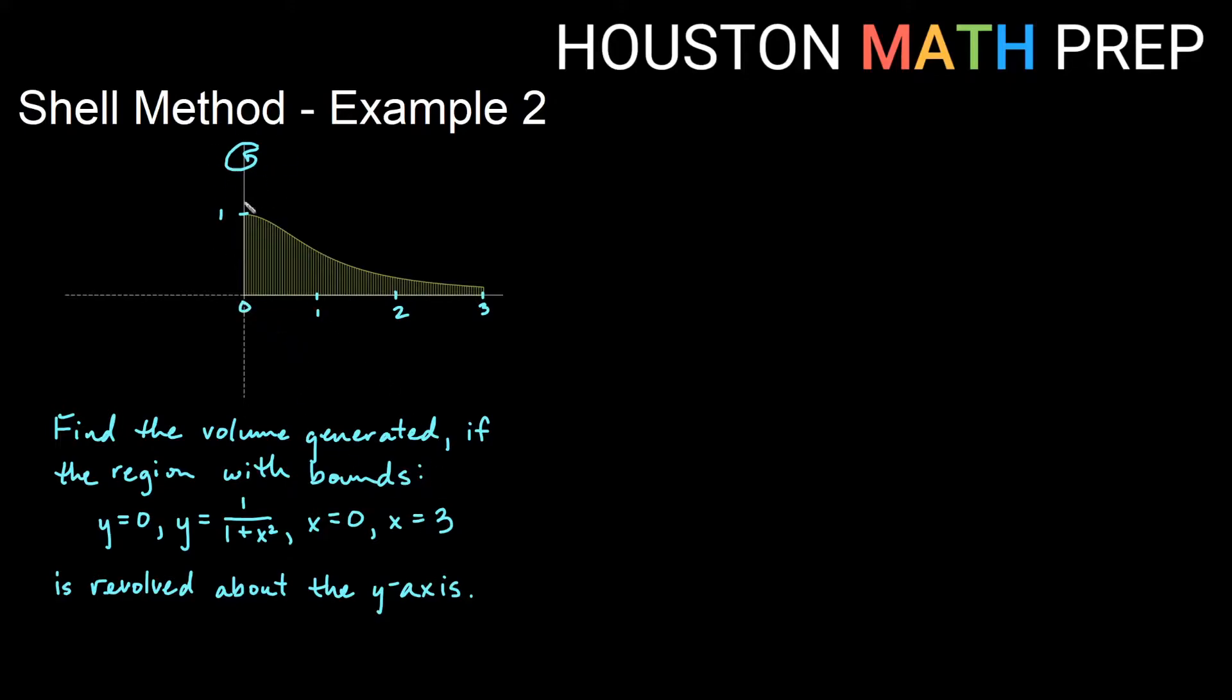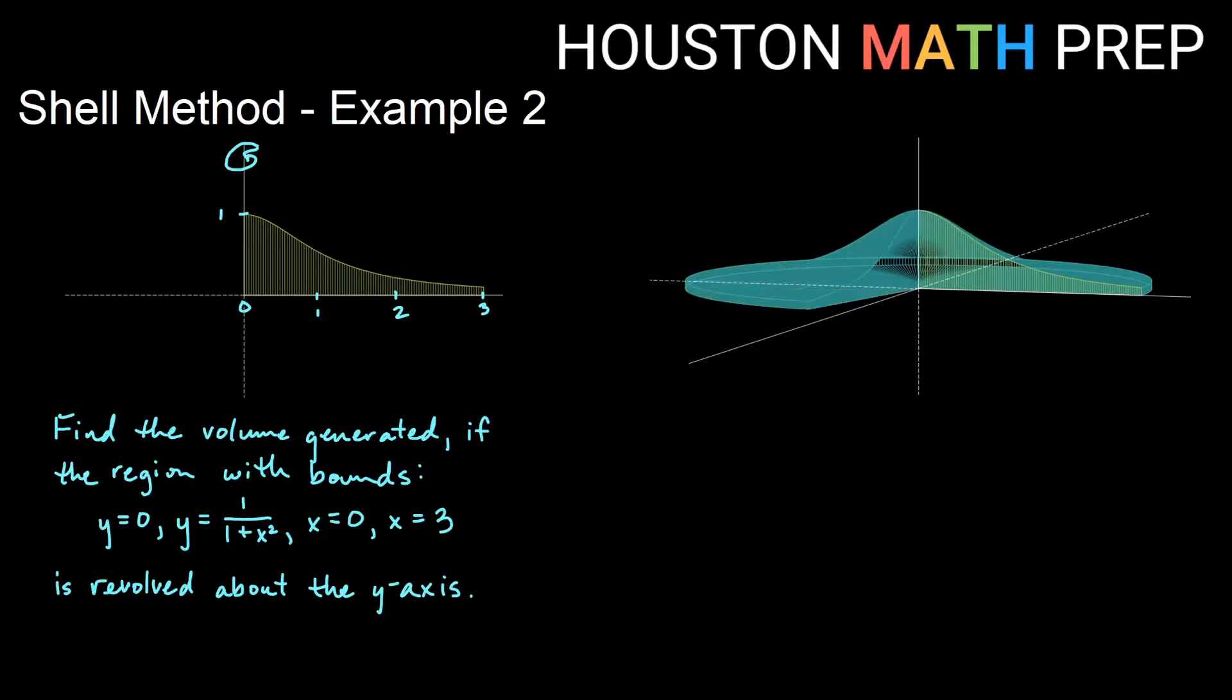Revolving about the y-axis. If we want to get an idea of the shape this generates, we can see that we get this peak at the top, a curved peak that slopes down outwards, some sort of hill shape as we revolve to get the volume.